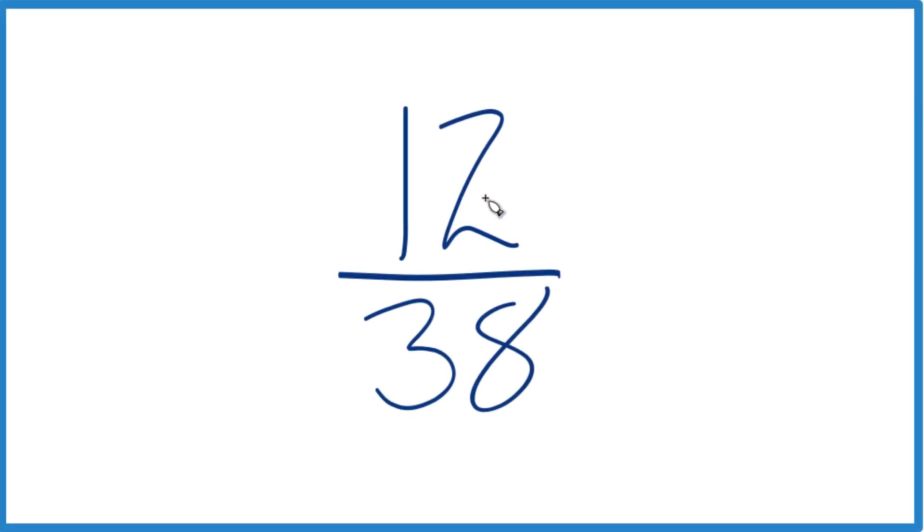Here's how you can simplify the fraction 12 over 38. So what we're looking for is a common factor, something that goes into both 12 and 38 evenly, a whole number. And we want the greatest common factor.